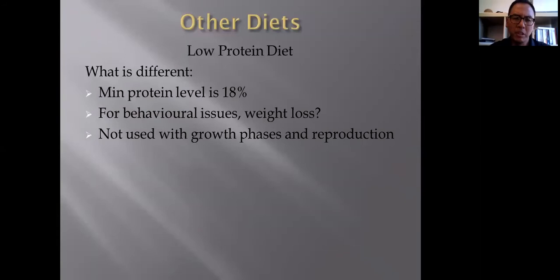The minimum level of protein is always at least 18%. The rationale behind it is that sometimes it's given for behavioral issues because of the linkage between high protein to energy level and hence behavioral issues. The idea is that if I don't give you so much energy, you're not so energetic and hence it may help with behavioral issues.